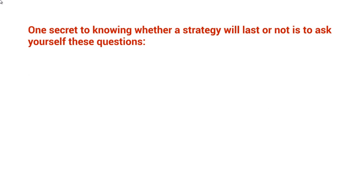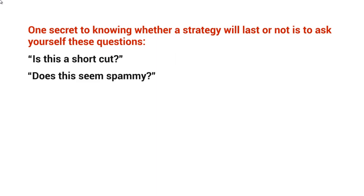We're not going to know exactly if the strategy is going to last or not, but part of the strategy is figuring out what Google wants and fulfilling that. One secret to knowing whether a strategy will last is to ask yourself: is this a shortcut and does this seem spammy? And will this upset your visitors — the people coming to your YouTube channel via Google.com or any other site? If it does, then Google is not going to like what you're doing, because they care more about the people who type in a keyword and search.